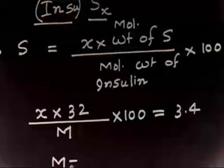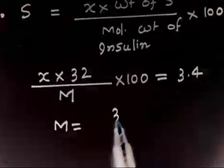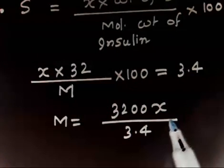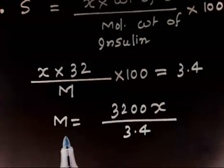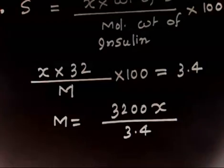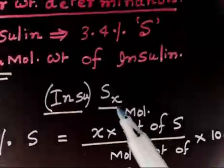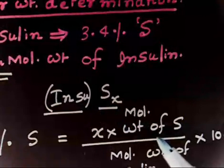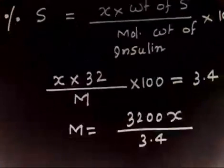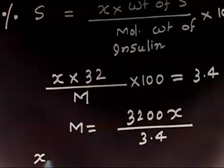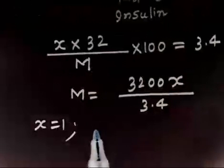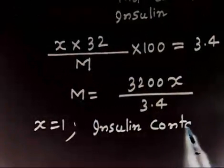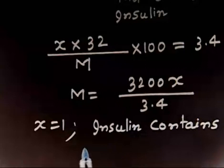Solving for M, we get M = 3200x / 3.4. Since molecular weight is a function of x, to find the minimum molecular weight we take x = 1. This physically means insulin must contain at least one atom of sulfur.